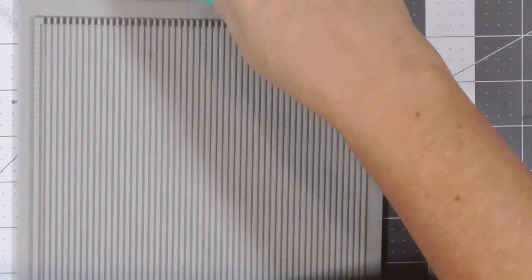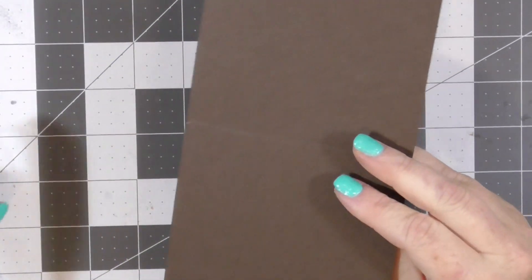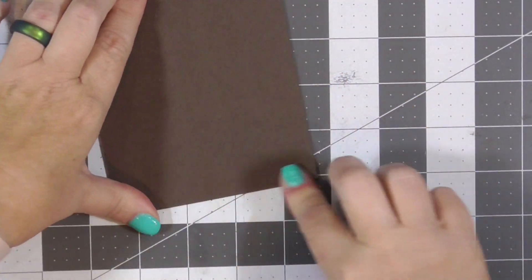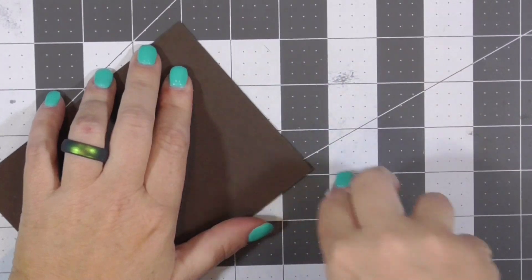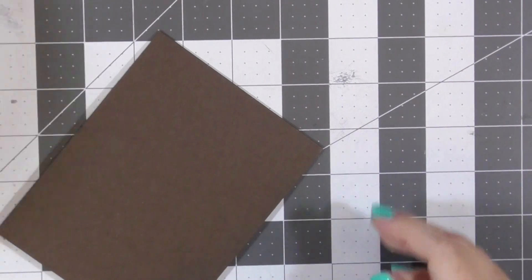I'm going to go ahead and score that at five and a half so that it will fold nicely, especially when you're doing these longer card stock pieces. Sometimes they crimp, they crinkle and kind of crease weird if you don't score them first because you're folding it against the grain. All right. I'm going to use this other bone folder to make sure that's down nice and smooth.